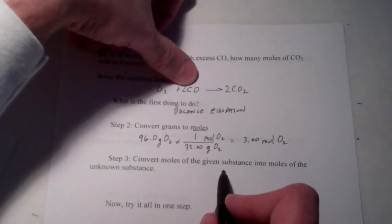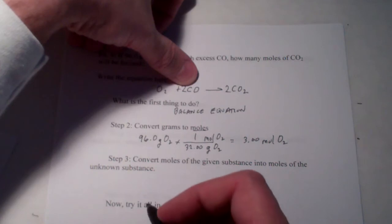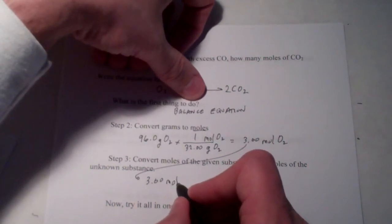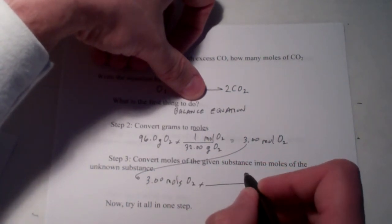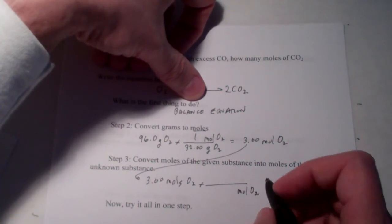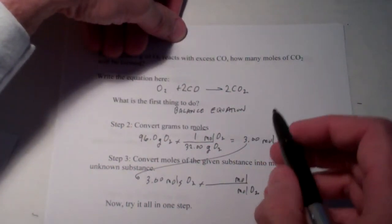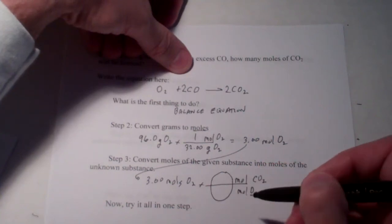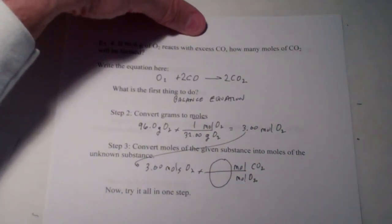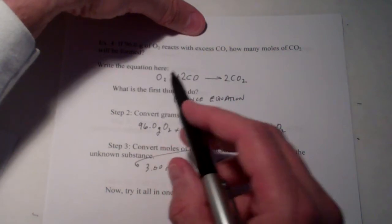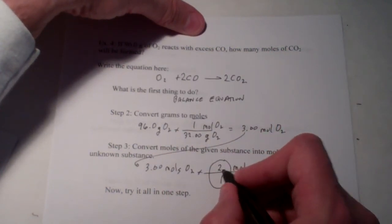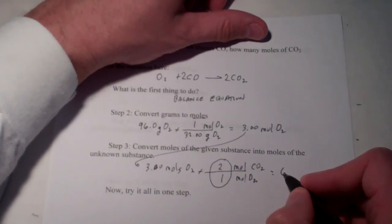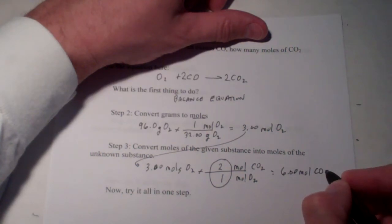Then, step three. Convert moles of the given substance into moles of the unknown substance. We have three moles of oxygen. We'll put moles of oxygen on the bottom. And moles of the unknown substance. We're after how many moles of CO2. This mole ratio comes from the balanced equation. For O2, there's a 1. And for CO2, there is a 2. So, 3.00 times 2 divided by 1 is 6.00 moles of CO2.